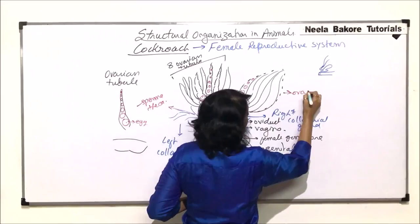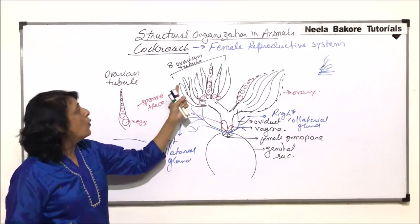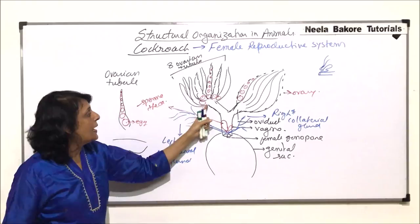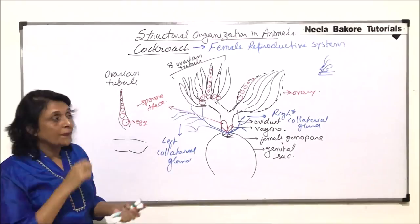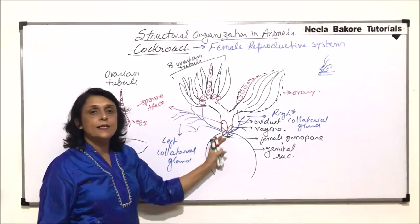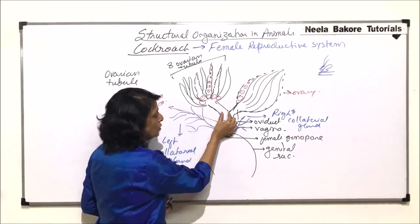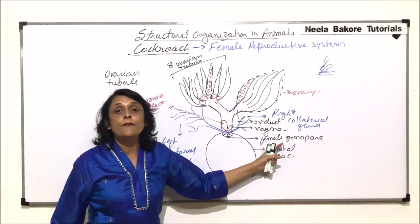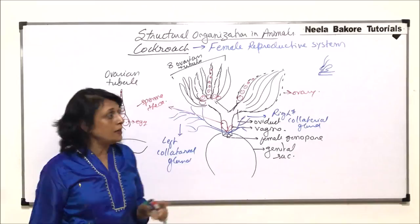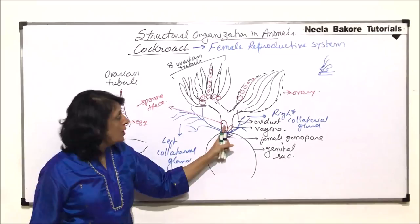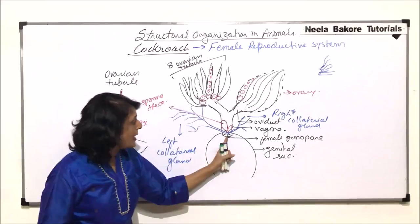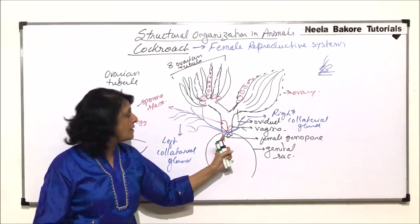In the female reproductive system we have the ovaries — each ovary has eight ovarian tubules, which are longish structures. In all these tubules we find various stages of eggs. The eggs are released alternatively, so one ovary releases the egg, then the other ovary. There are two oviducts which bring this egg through the vagina, and the egg will be released from the female gonopore. During copulation, the males deposit the sperms into these spermathecae, where sperms remain stored. As soon as the egg is released, sperms are released from the spermathecae to fertilize those eggs.